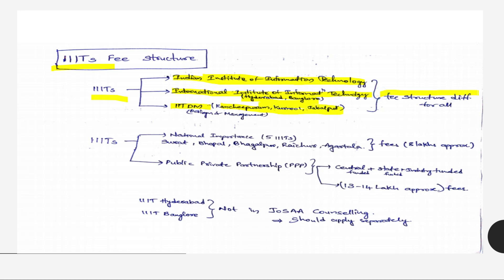These fee structures will be different from each other. In IIIT there are five IIITs which are of national importance: Surat, Bhopal, Bhagalpur, Raichur, and Agartala. In these five IIITs, fees will be approximately 8 lakhs per 4 years.